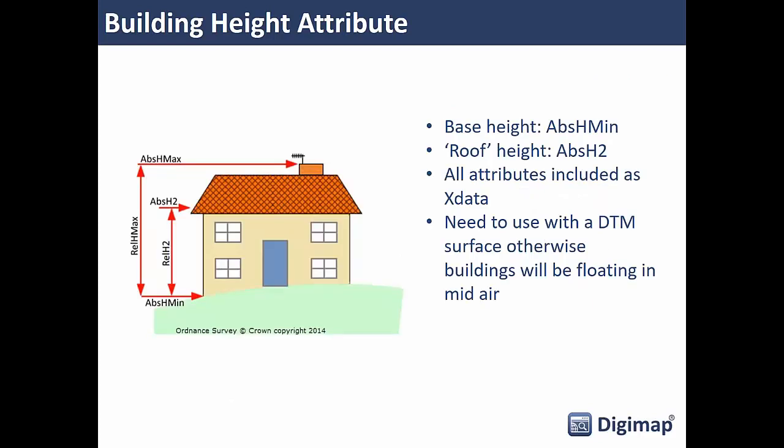In terms of the height information supplied with building height attribute data, there are several attributes: three absolute heights — absolute height minimum (base of the building), absolute height 2 (the eaves), and absolute height max (the very top feature, such as a chimney pot or roof apex). From those three absolute heights, two relative heights are derived: relative height from base to eaves, and relative height from base to the very top of the building.